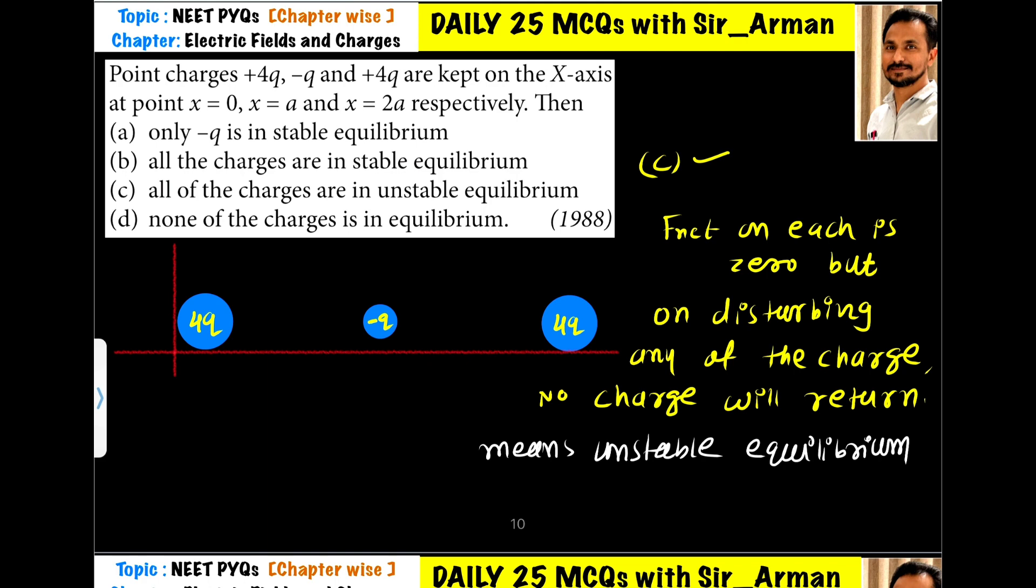So option C is incorrect. That is, F net on each charge is zero, but on disturbing any of the charge, no charge will return. This means unstable equilibrium.